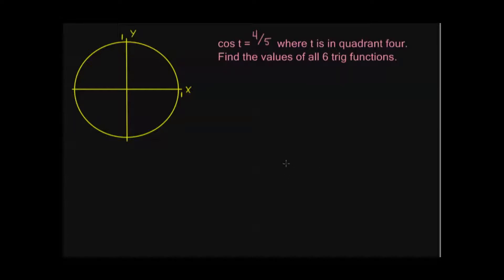This first problem reads: cosine of t equals 4 fifths, where t is in quadrant 4. Find the values of all six trig functions. I should have written this a little bit better — not necessarily where t is in quadrant 4, but where the terminal point determined by t is in quadrant 4. So cosine of t equals 4 fifths. In order to find the rest of the trig functions, I'm going to use my first Pythagorean identity to find sine of t.